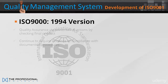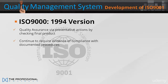The ISO 9000 1994 version placed emphasis on quality assurance through preventative actions and required evidence of compliance with documented procedures, as with the first edition. The downside was that companies tended to implement its requirements by creating many procedural manuals and became burdened with ISO bureaucracy. In some companies, adopting and improving processes could actually be impeded by the quality system.